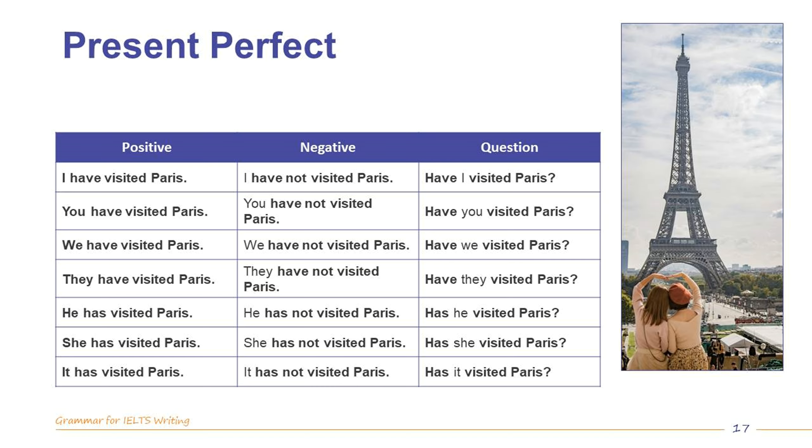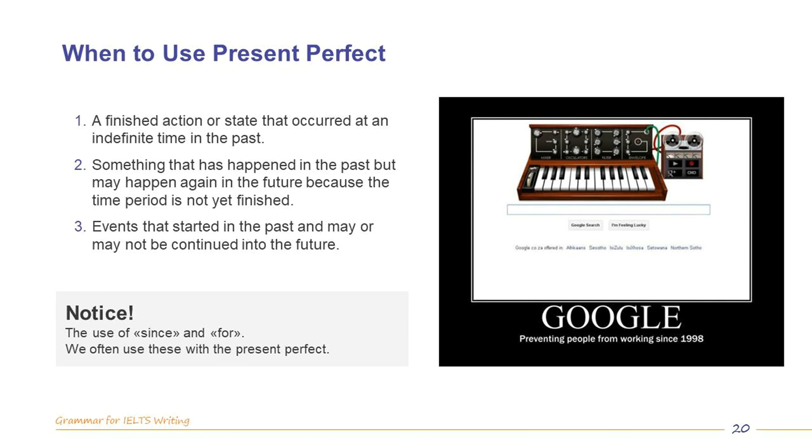The next present tense is the perfect. As we saw in the main verb tense table previously, it is formed with have or has and the past participle form of the verb. The present perfect can be a little trickier than other present tenses. So let's look closely at three of its uses. Number one, a finished action or state that occurred at an indefinite time in the past. I have been to France. She has eaten sushi. They have learned Chinese.